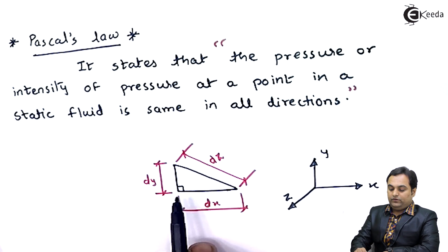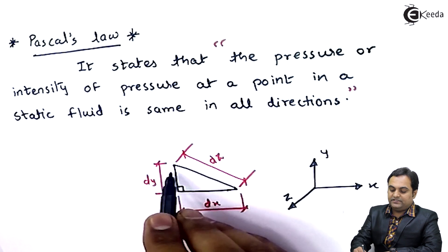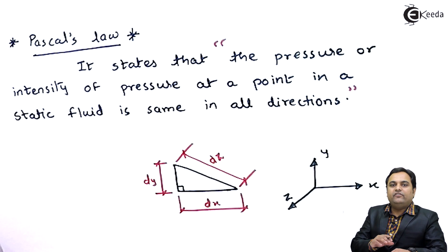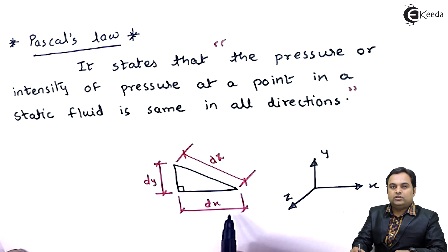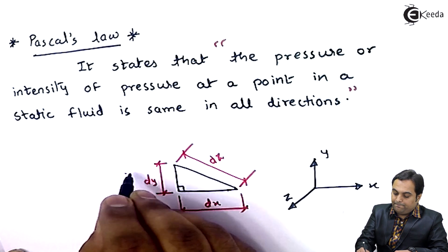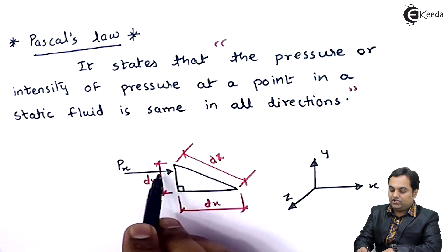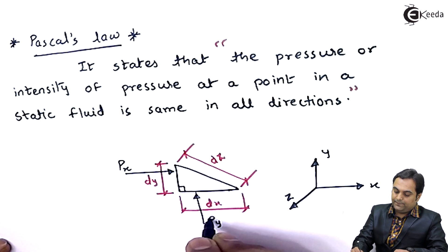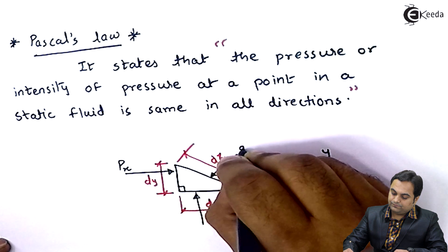For the element shown here, if the element is kept inside the fluid, then the pressure exerted in all directions will be the same as per Pascal's law. Along x direction we have distance dx, so the pressure acting along x direction will be denoted as p suffix x. Next, along y direction the pressure is p suffix y, and along z direction the pressure is p suffix z.